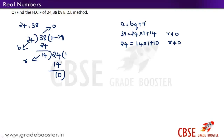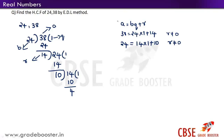Even now the remainder is not equal to zero, so repeat the step again — make b the dividend and r the divisor. 10 divides 14 one time and the remainder is 4. Let us express this in the form of Euclid's division lemma: 14 = 10 × 1 + 4. Even though the remainder is not equal to 0, we continue applying Euclid's division lemma till remainder is 0.